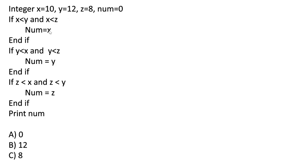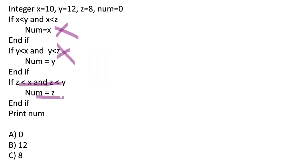Since the first if is false, we move to the next. Checking y < x: 12 < 10 is false. Then checking z < x AND z < y: 8 < 10 is true and 8 < 12 is true — both conditions are true, so num is assigned the value of z, which is 8. The final printed output is 8.